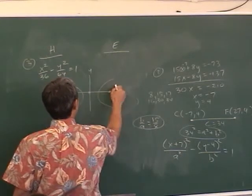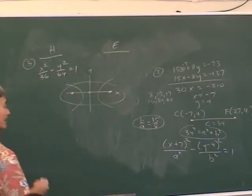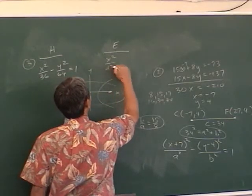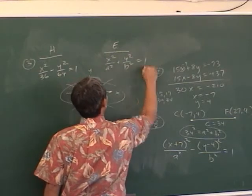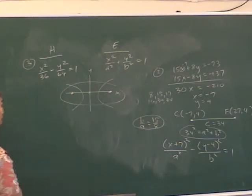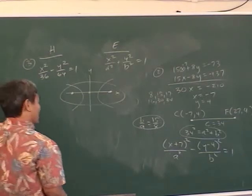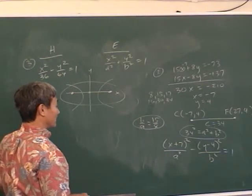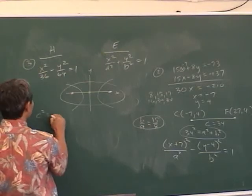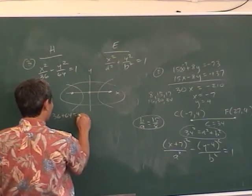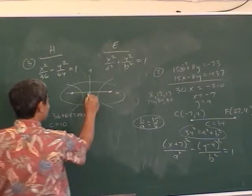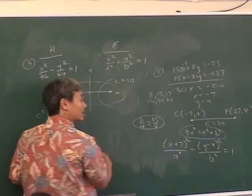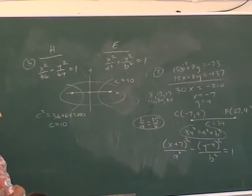The hyperbola and ellipse share the same foci, so the center of the ellipse is also at the origin. The equation of the ellipse is x² / a² plus y² / b² equals 1 — we just need to find a and b. For the hyperbola, c² equals a² plus b², which is 36 + 64 = 100, so c is 10. Since they share the same foci, c equals 10 for the ellipse as well.